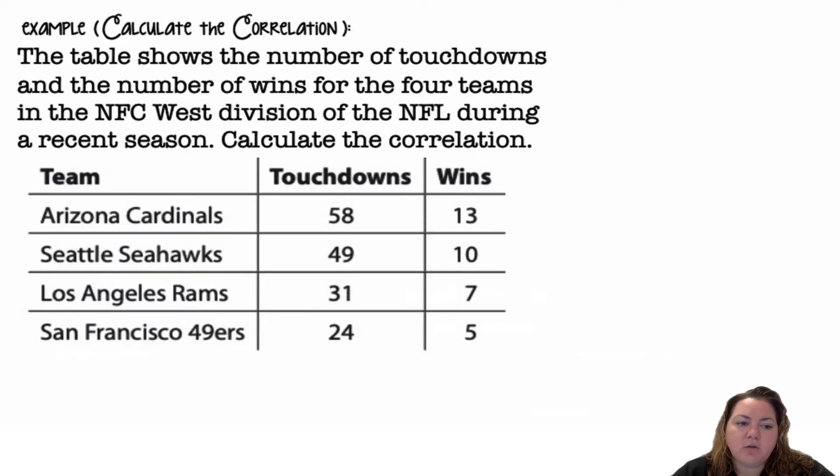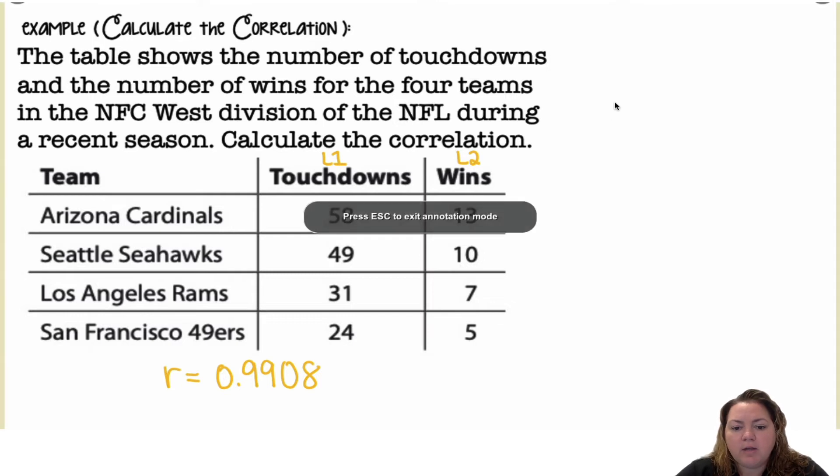Calculating the correlation. The table shows the number of touchdowns and the number of wins for four teams in the NFC West division of the NFL during a recent season. Calculate the correlation. We're going to put this data into list 1 and this data into list 2. We're going to go stat calc 8, and we should get R equals 0.9908. Let me show you what this looks like in the calculator.